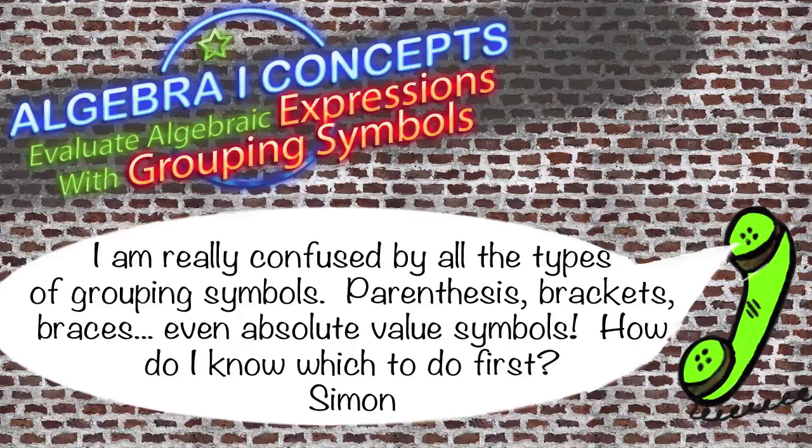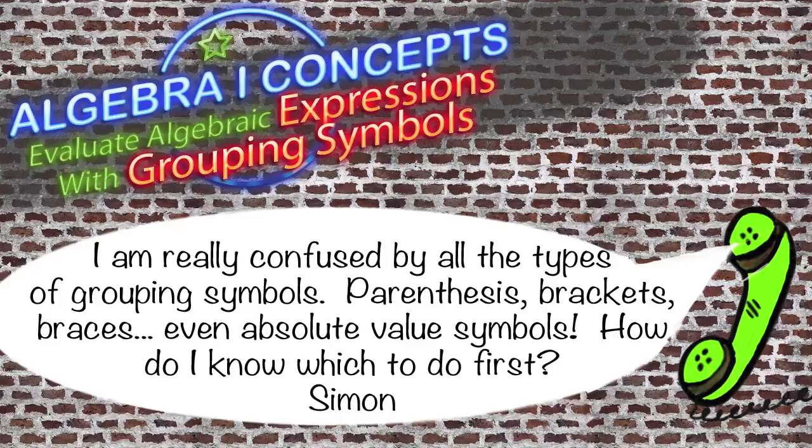Hey, it's Simon here. I'm really confused. I need to solve a math problem, but I'm completely stumped by all the symbols. Have you even seen parentheses, brackets, braces, and those absolute value symbols to group sets of numbers? What do they all mean? They are all in the same problem. Which do I group first?